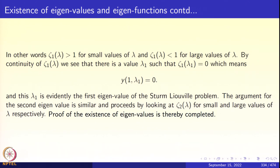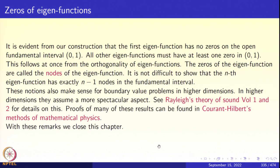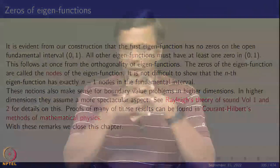For the second eigenvalue, the argument proceeds along similar lines, looking at ζ₂(λ), the second zero of y(x, λ). For small λ it is larger than 1, for large λ it is smaller than 1. Comparing with sin(M√λ · x) and sin(m√λ · x), the proof of the existence of infinitely many eigenvalues is completed by induction.